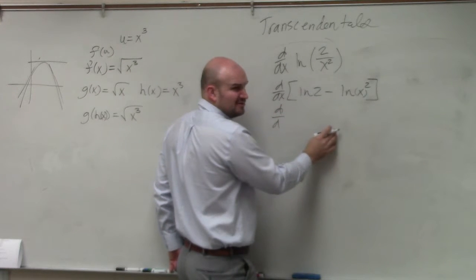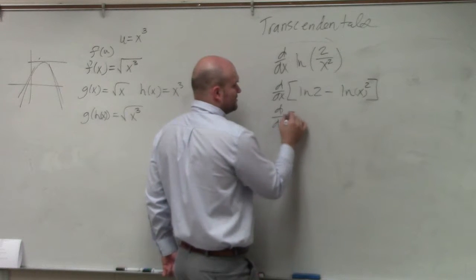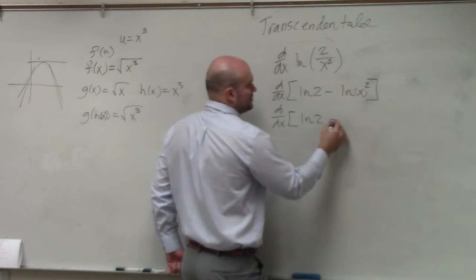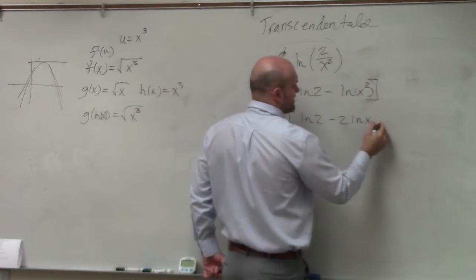Because you wouldn't want to use the chain rule again, would you? No, why use the chain rule unless we have to? So we could change this to d over dx as ln of 2 minus 2, because that's inside, 2 times ln of x.